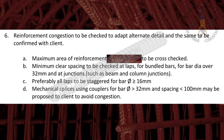Point 6. Reinforcement congestion to be checked to adapt alternate detail and confirmed with client. Maximum area of reinforcement to be cross-checked. Minimum clear spacing to be checked at laps, for bundled bars, for bar dia over 32 mm, and at junctions such as beam and column junctions. Preferably all laps to be staggered for bar dia greater than or equal to 16 mm. Mechanical splices using couplers for bar dia greater than 32 mm and spacing less than 100 mm may be proposed to client to avoid congestion.